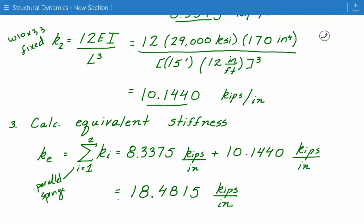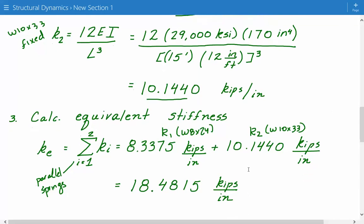So we just add K1, which is W8 by 24 stiffness, plus K2, which is a W10 by 33 stiffness. So 8.3375, plus 10.1440 kips per inch. It gives us an equivalent stiffness of 18.4815 kips per inch.